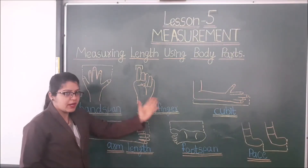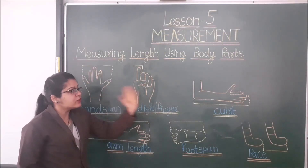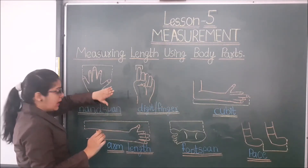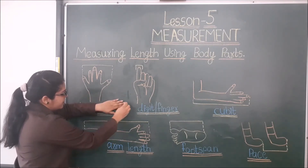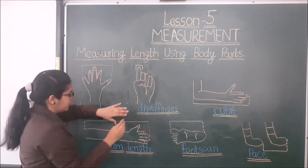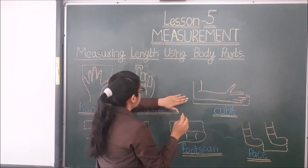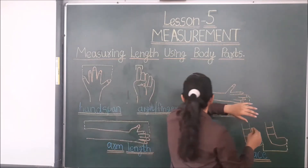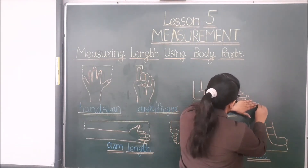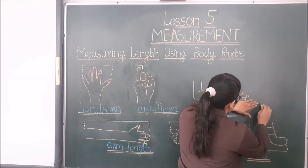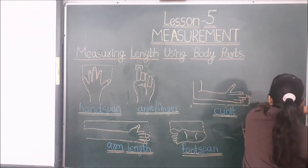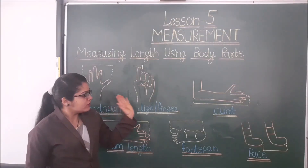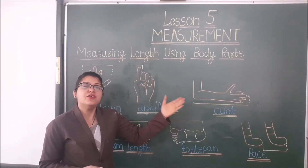Students, this is the blackboard. We can measure the length of this blackboard with the help of cubit. Put your elbow here and your middle finger here — that is 1 cubit. And counting: 2, 3, and 3 and a half. So the length of this blackboard is 3 and a half cubits.